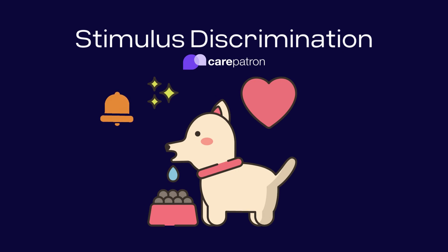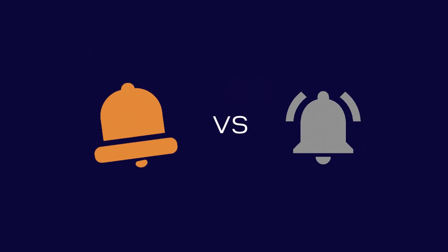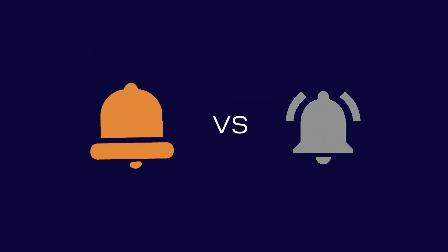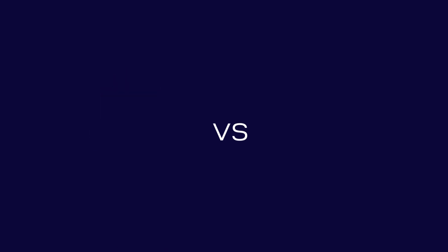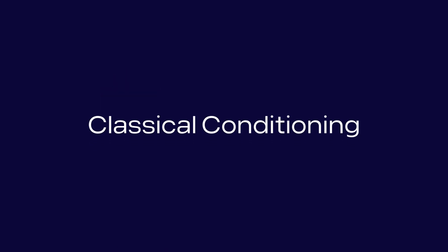Stimulus discrimination is a critical concept in psychology that entails the ability to distinguish between different stimuli that might appear similar. This process is vital in learning and behaviour, where the individual responds to specific stimuli while ignoring others that don't have the same meaning.